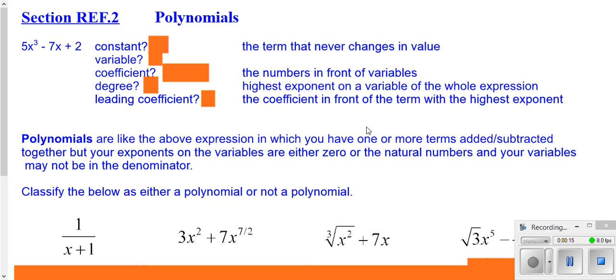What we have here in the upper left is a polynomial. A polynomial is one or more terms added together. Terms are the things in between the plus and the minus sign. So, the negative 7x is a term, the 2 is a term, and the 5x to the third is a term.